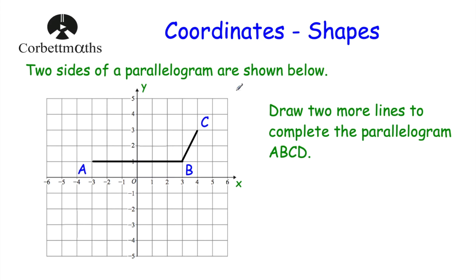Next, the question says we've got the two lines of the parallelogram shown below and we've been asked to draw two more lines to complete the parallelogram A, B, C, D. To complete this parallelogram, let's consider its properties: opposite sides are the same length and they're also parallel. So let's consider the line A, B — to get from A to B, we're going 6 across. So that means if we want to find where D would be, let's start at C and go 6 across. So the point D would be here.